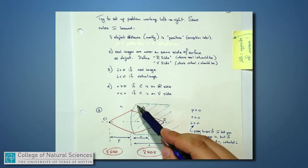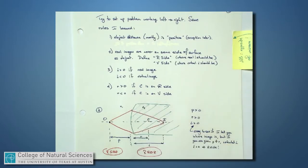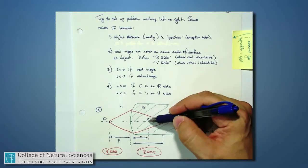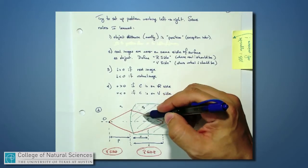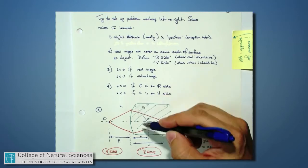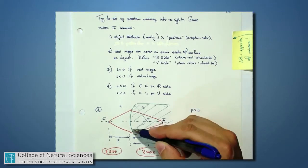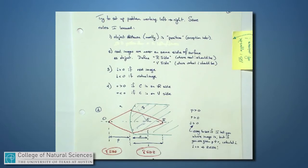And the radius of curvature for this surface has a sign as well. In other words, it's positive or negative depending on whether the center of curvature, that's the point from which you would draw all these little radii. If that center of curvature is over on the real side, then r is a positive number.